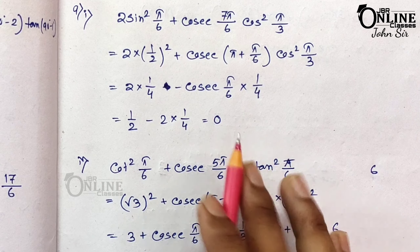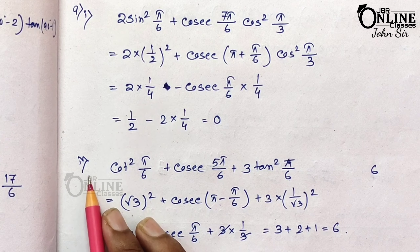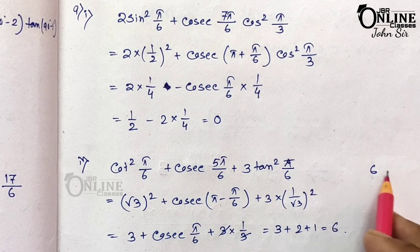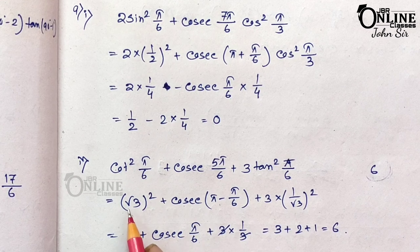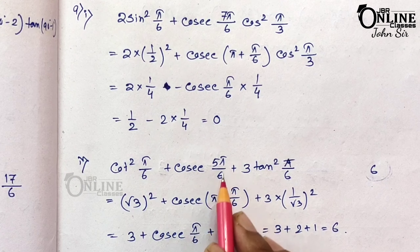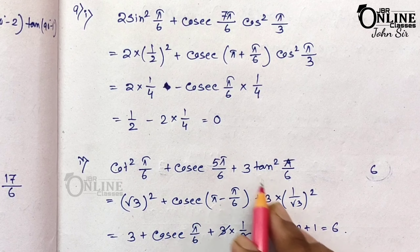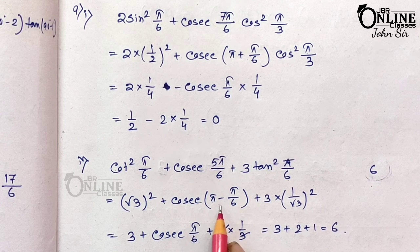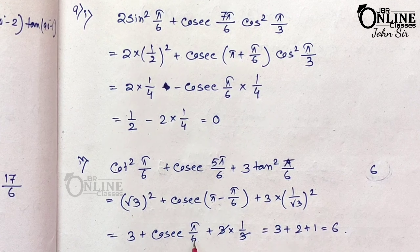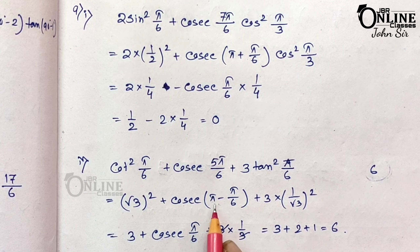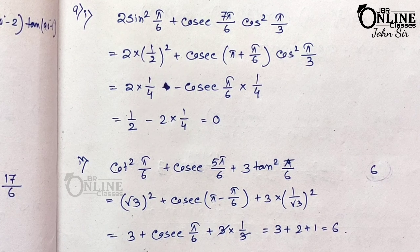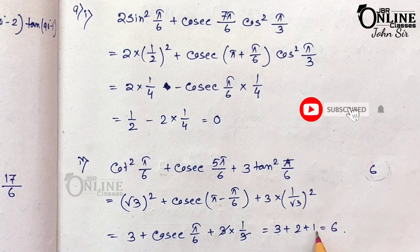Problem 9.4: Prove that cot²(π/6) + cosec(5π/6) + 3tan²(π/6) = 6. cot(π/6) = √3, so cot²(π/6) = 3. cosec(5π/6) = cosec(π − π/6) = cosec(π/6) = 2 (second quadrant, cosec positive, and π is an even multiple of π/2 so function unchanged). tan(π/6) = 1/√3, so 3tan²(π/6) = 3·(1/3) = 1. Therefore 3 + 2 + 1 = 6. Proved.